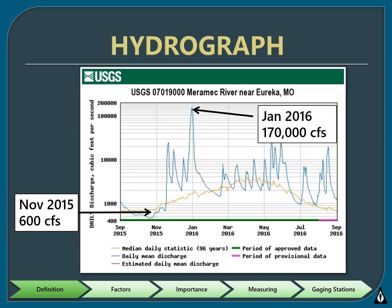Discharge changes naturally with the seasons throughout the year. Higher flows occur in the wet seasons of winter and spring, while lower or base flows usually occur in the drier seasons of summer and early fall. Here we see a hydrograph for the Merrimack River near Eureka. Not only does this show variation in discharge for different seasons, but we can also see there was a high-flow event at the very end of December 2015. The St. Louis area had 10 inches of rain, which took the stream discharge from 600 CFS to 170,000 CFS, causing flooding.